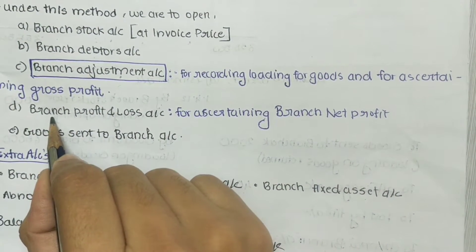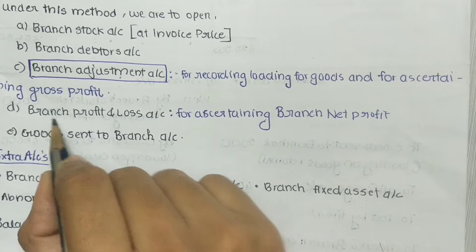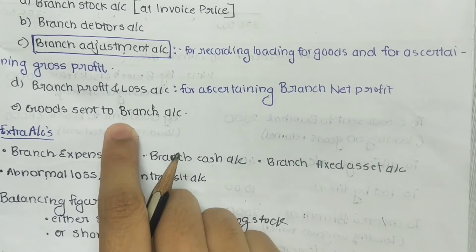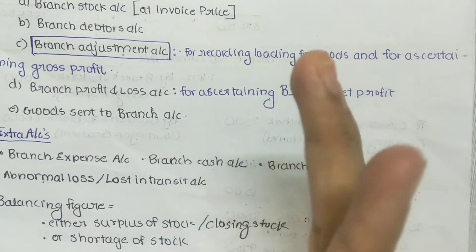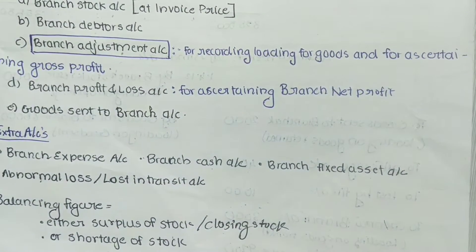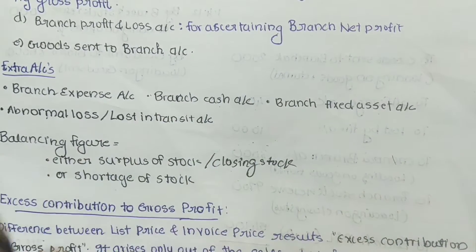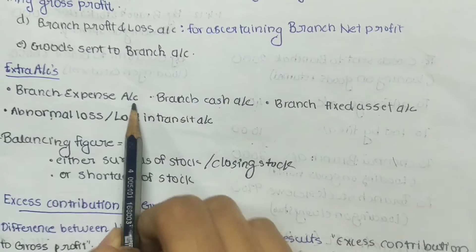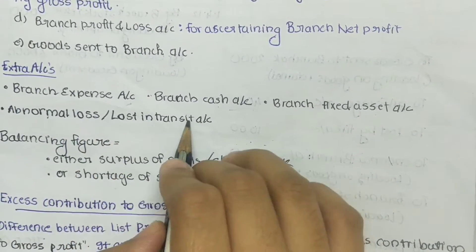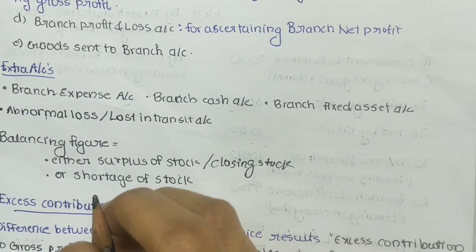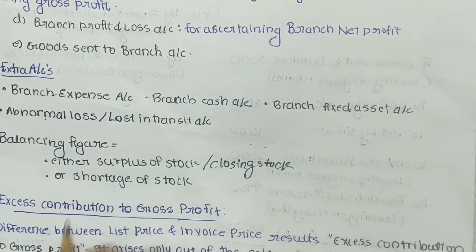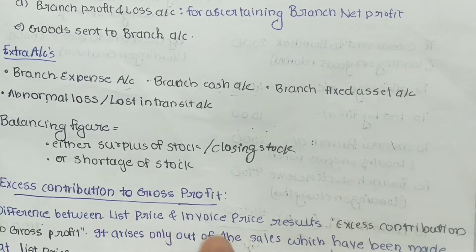The Branch Profit or Loss Account is maintained to ascertain branch net profit. Next is the Goods Sent to Branch Account, though it is not always necessary to open every account — it depends on the question. Extra accounts that may be opened under Stock and Debtors Method include Branch Expense Account, Branch Cash Account, Branch Fixed Asset Account, and Abnormal Loss or Loss in Transit Account.